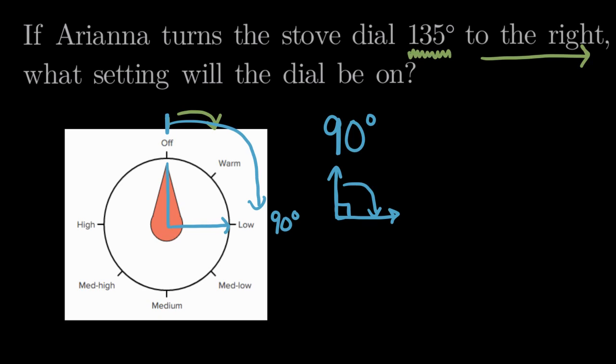But we're not going 90, we're going 135, which is more than 90 degrees. So here's one clue. We know we're going farther than the low setting. We don't know how much farther, we're definitely going to go past the low setting.